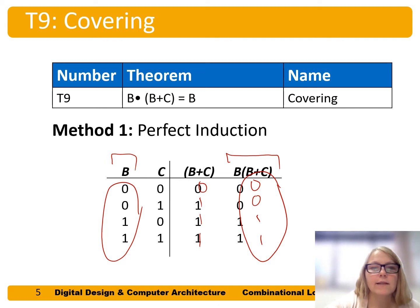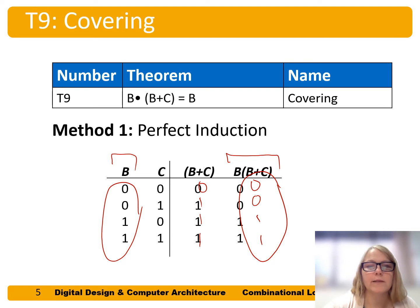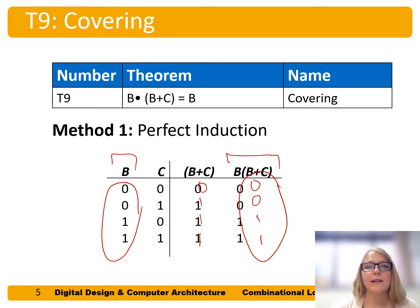We're going to get zero AND whatever the B or C column is, but zero AND anything is just 0, so those two rows are 0. Then when B is 1, B and (B or C) is also 1, so both those rows are 1. We get 0, 0, 1, 1 — and we can see that this is just equal to column B. So B and (B or C) is equal to just B.